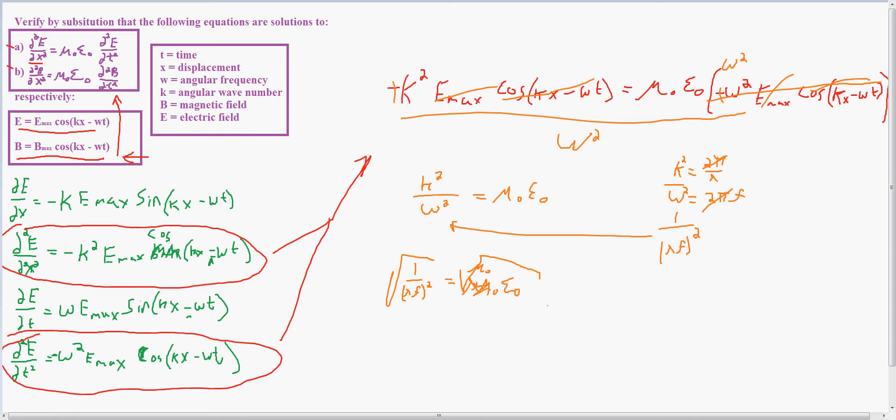And then I inverse them, so I get lambda times frequency, which is equal to square root mu naught epsilon naught. And then I inverse them, so I get lambda times frequency, which equals c, the speed of light, which is also equal to this. And these are all equal to each other, so I proved by substitution that those equations are solutions.